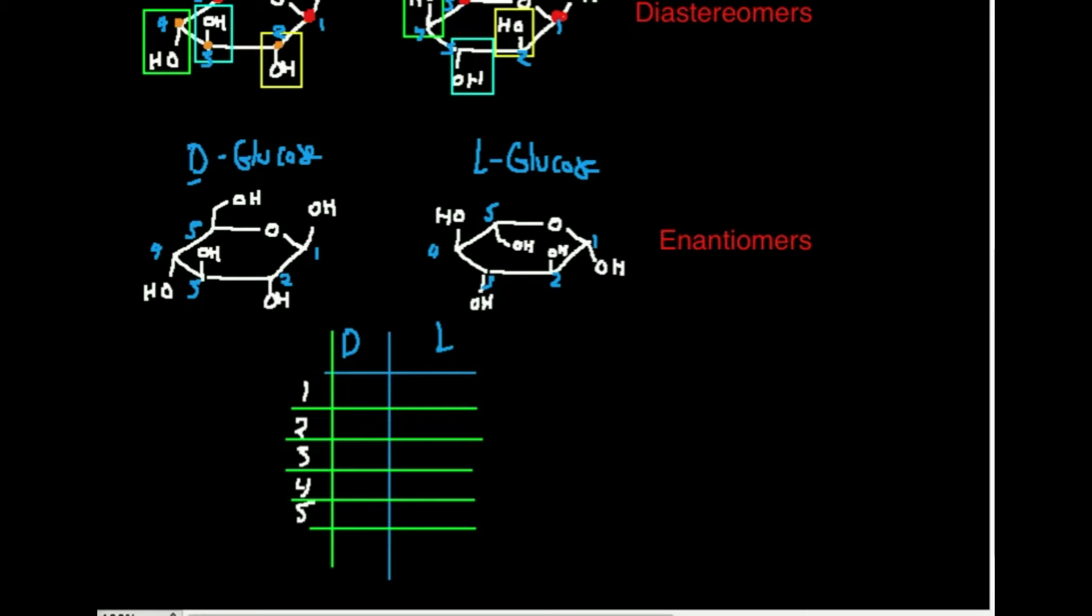Let's do the D-isomer first. What about position 1, up or down? Well, 1 is clearly up. 2 is clearly down. What about 3? 3 is up. 4 is down. 5? When you're looking at 5, you're looking at this hydroxymethyl group right there, and that's clearly up.